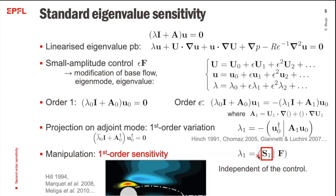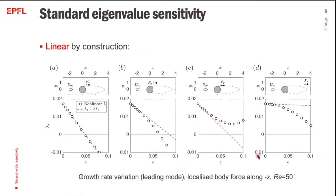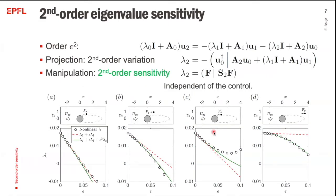Since it is independent of the control, we can compute it once for all. However, this is linear by construction. Showing four examples with localized body forces along the minus-x direction at different locations in the cylinder wake, the agreement — slope at zero and amplitude at ε=0 — is usually very good, but in some cases the agreement starts to break down for larger amplitudes. A natural thing to do is simply to go to second order.